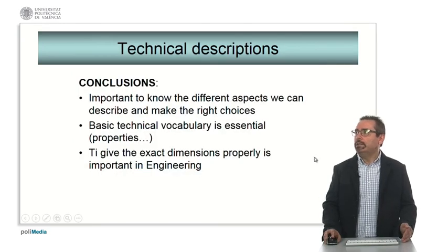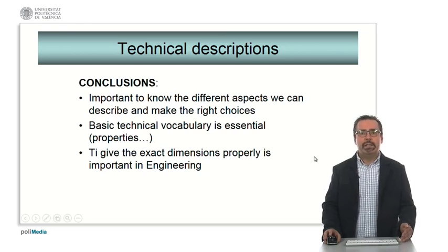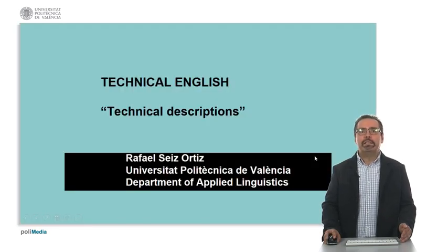In conclusion, there are different aspects that you must take into account when describing. And you must have certain basic technical vocabulary about properties, etc. And you have to give the exact dimensions properly with any of these four possibilities that we dealt with at the end of this learning object. Thank you very much, and I hope this was useful for you.